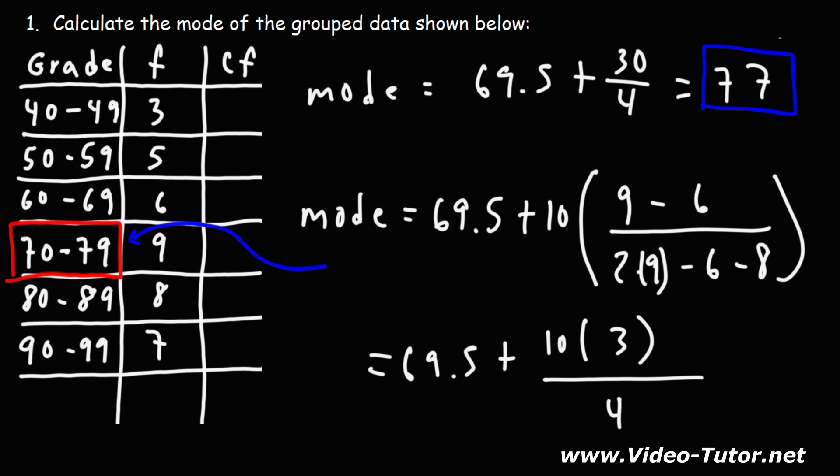So that's it for this video. That's how you can calculate the mode of group data whenever you have it. By the way, for those of you who want access to the formulas like this one, like how to calculate the mode or how to calculate the median of group data, or how to calculate variance or standard deviation, I have a formula sheet in the description section below, which I think is going to be very helpful for you. So feel free to download that when you can. Thanks again for watching.